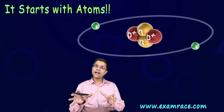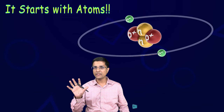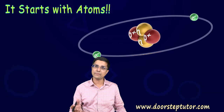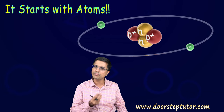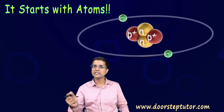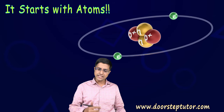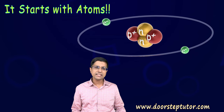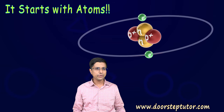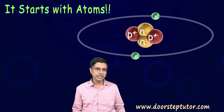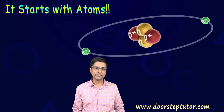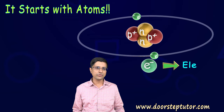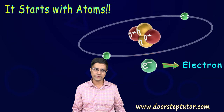We'll go back to a very basic thing, something which is there in all matter, and that is the atom. It is the most basic aspect of all the matter we see around us. This atom is made up of two basic components: there is a nucleus at the center, and then there are electrons which go around this nucleus.